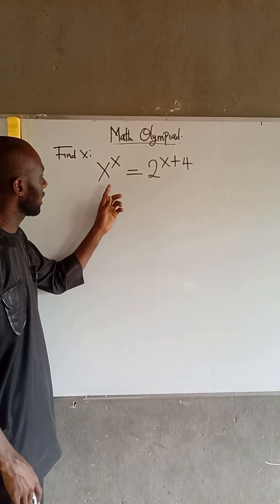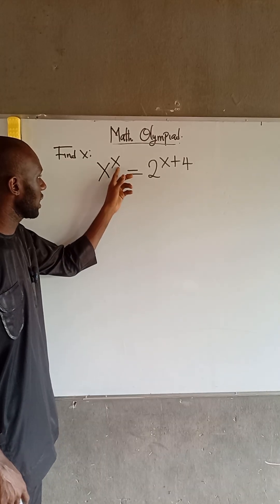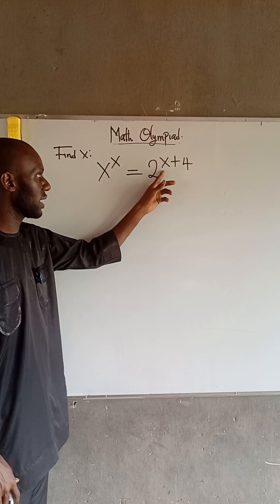So, we are asked to solve for x, given that x to the power of x is equal to 2 to the power of x plus 4.